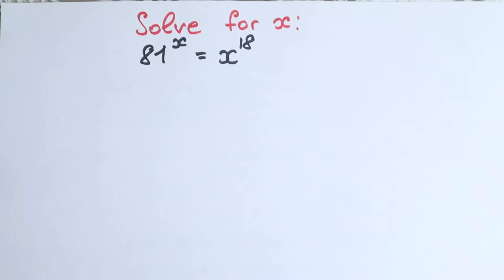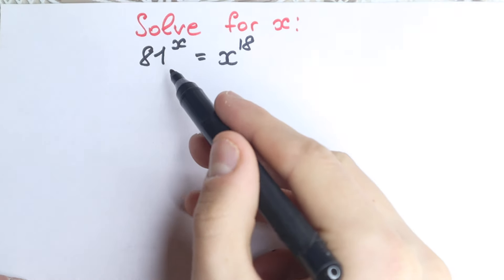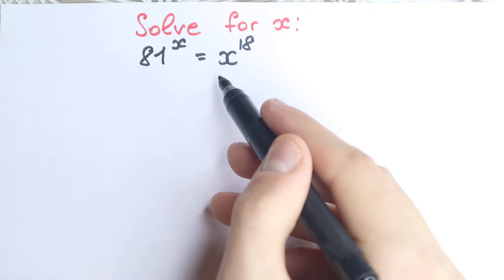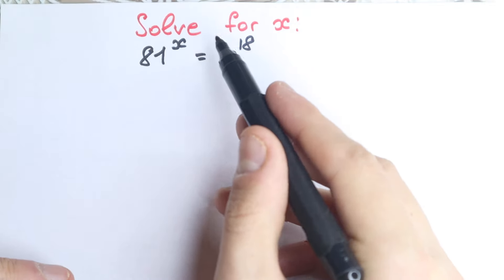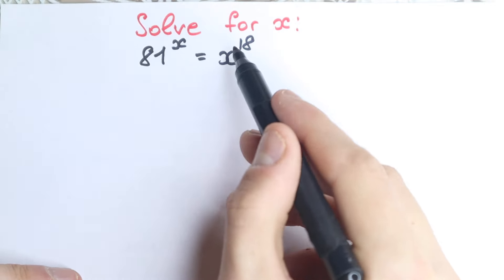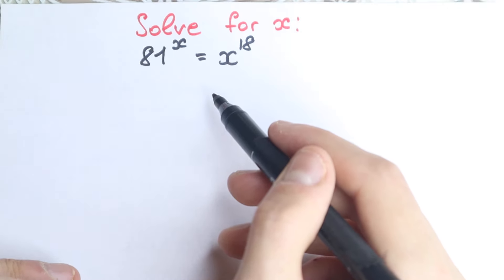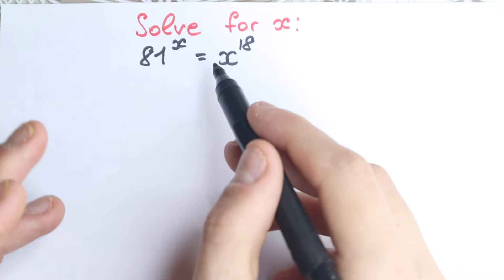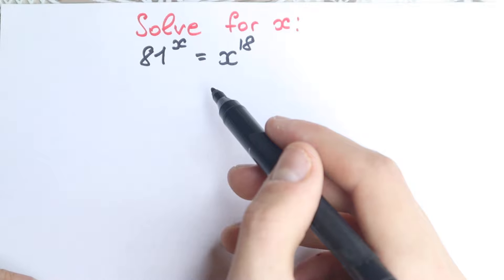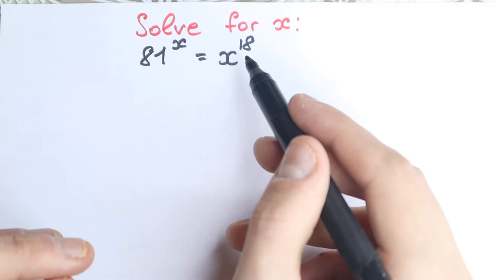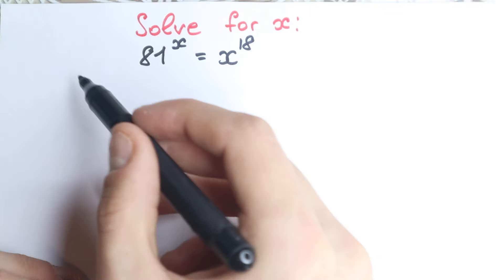Hello everyone, welcome back to higher mathematics. In this video we're going to solve this really interesting exponential equation: 81 to the power x equals x to the power 18. On the first look this seems like an easy equation, but it's actually a little bit complicated. In this video I'm going to show you two best approaches, two best methods, how we can solve these interesting questions. So let's start with the first method.